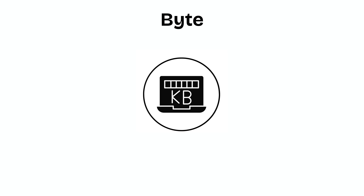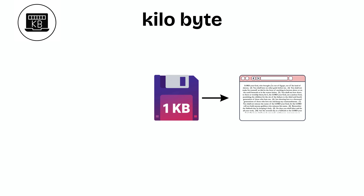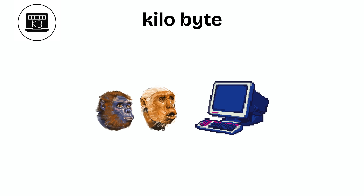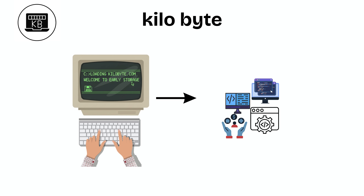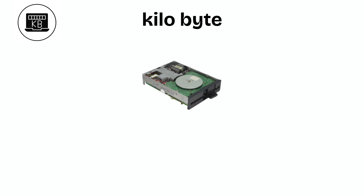Kilobyte (KB). 1 kilobyte equals 1024 bytes. That's about half a page of typed text or a very small image. In the early days of computing, programs were written to fit inside a few kilobytes.